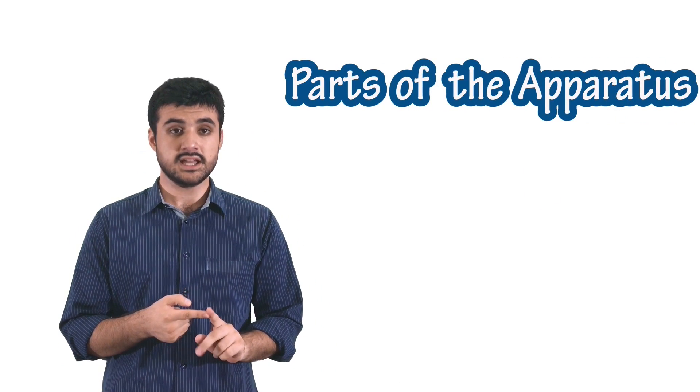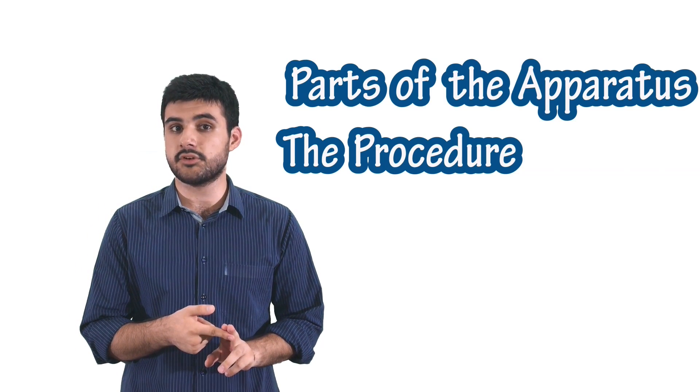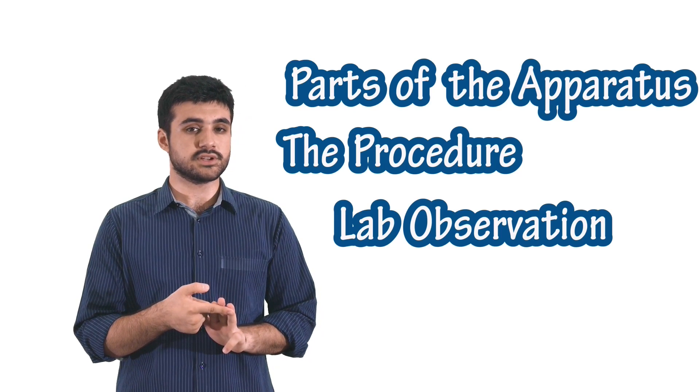And lastly, each one of these experiments is subdivided into three different parts. First of all, where we explain and name the parts of the apparatus. Second, we explain the procedure, how the experiment has been performed. And third, but not the least, we give you all the lab observations and calculations we made. Hope that sums up all the confusion. Enjoy.